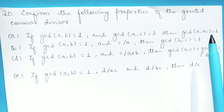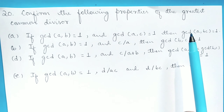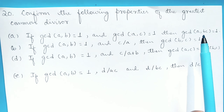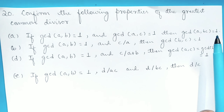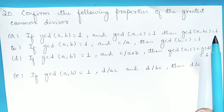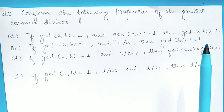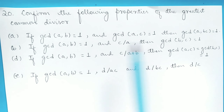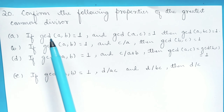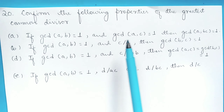If I want to show that GCD of A and BC is 1, then I have to show that 1 is a linear combination of A and BC. And I will do that by using these two given conditions.